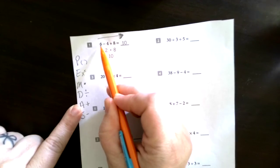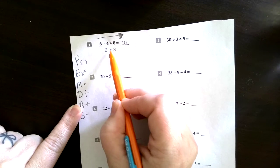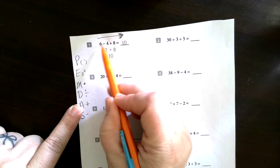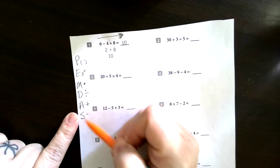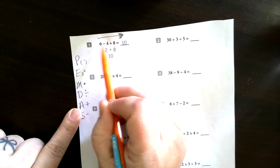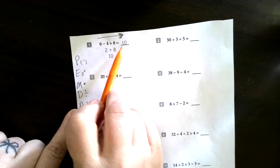Sorry, so we do 6 minus 4, gives us 2, and then we add the 8. My bad. So we're gonna do the subtraction first, even though it comes last in the order of operations, but as we come across them from left to right. Hopefully that makes sense as we work some of these problems out.